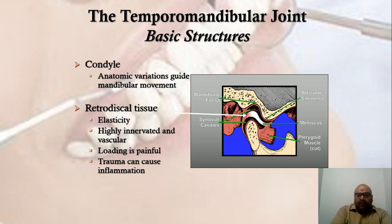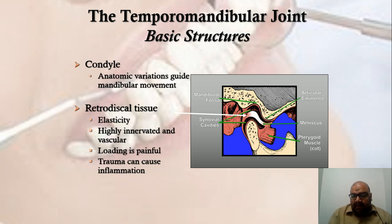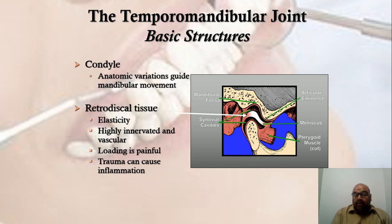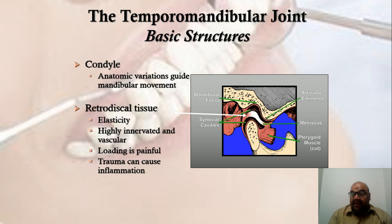The articular disc has three portions: an anterior part, an intermediate part, and a posterior part. The thinnest part is the anterior part; the intermediate part is thicker; and the most thick is the posterior part. The posterior part of the articular disc is confluent with the retrodiscal tissues. The articular disc itself is avascular and aneural — there are no blood vessels and no neural elements within it.